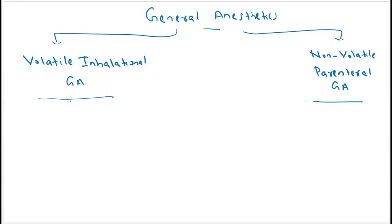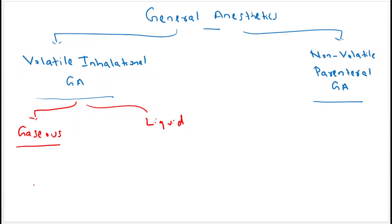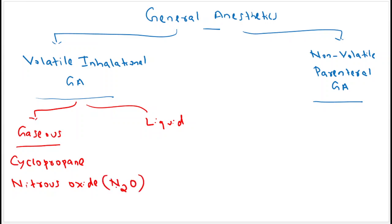Volatile general anesthetics exist in two forms: gaseous and liquid. The drugs in the gaseous category include cyclopropane, nitrous oxide (N₂O), xenon, and entonox. Among these, cyclopropane and nitrous oxide are clinically not used, while xenon and entonox are used.